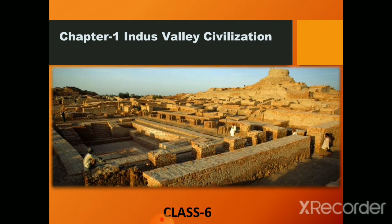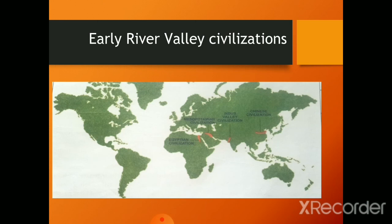In this session, we will discuss about the topic of early river valley civilizations. Look at the map. You can see the locations of the early river valley civilizations — the Indus River Valley civilization, the Egyptian, the Mesopotamian, and the Chinese civilization. All these are examples of early river valley civilizations.